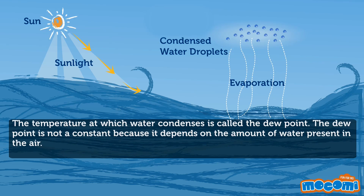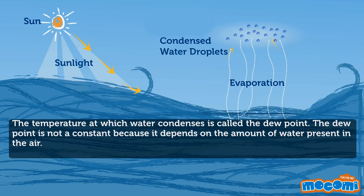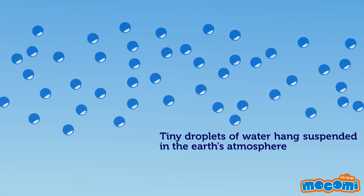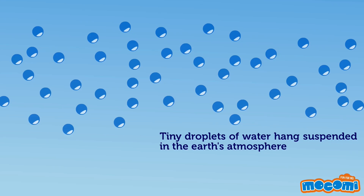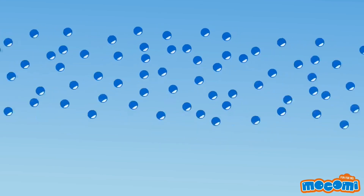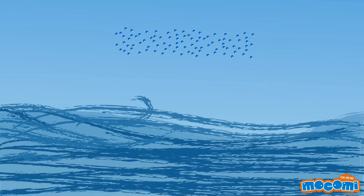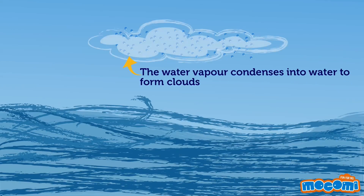The temperature at which water condenses is called the dew point. The dew point is not a constant because it depends on the amount of water present in the air. Tiny droplets of water hang suspended in the earth's atmosphere, and the water vapor condenses into water to form clouds.